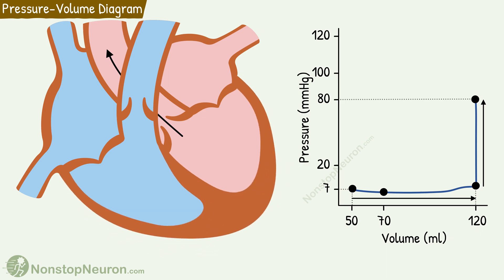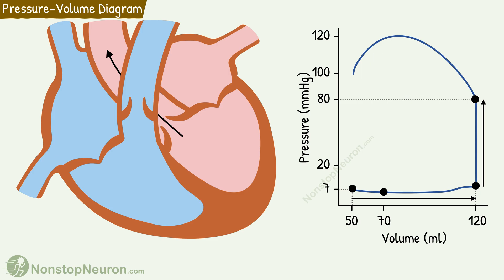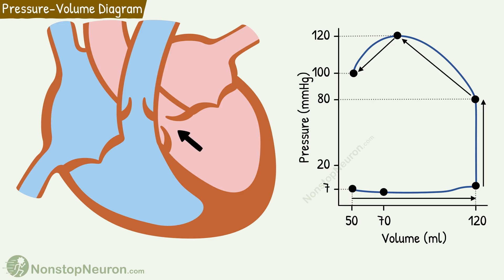Now the ejection of blood starts, so the volume falls. By the end of ejection, the volume reaches the lowest value of 50 ml — this is the end systolic volume. Regarding pressure during this, initially there is a rise in pressure as the ventricle continues to generate force. Pressure reaches the maximum of about 120 mmHg. Then the ventricular musculature starts to relax, so the pressure falls to about 100 mmHg, and the aortic valve closes here.